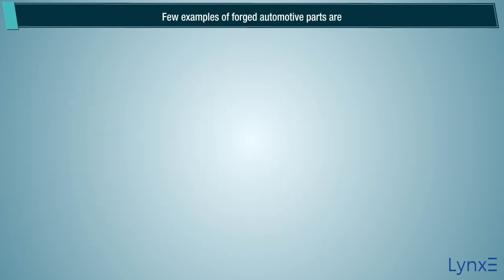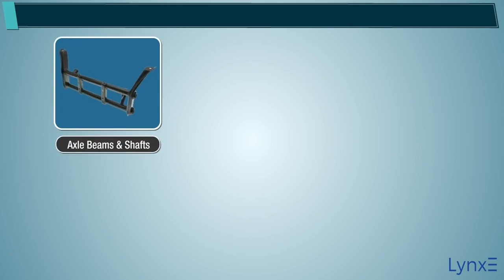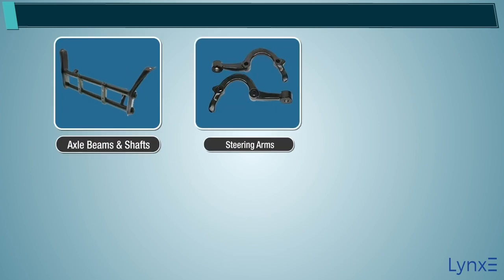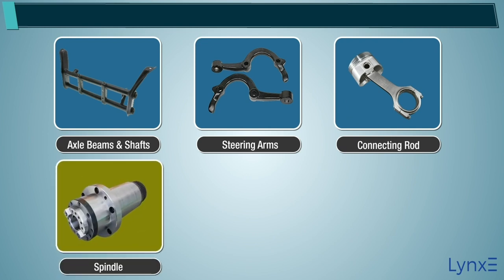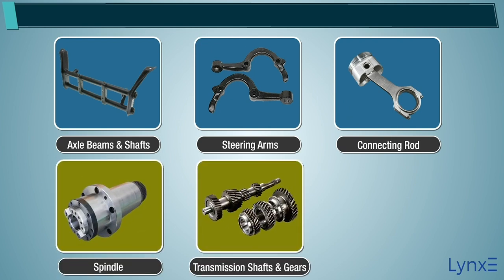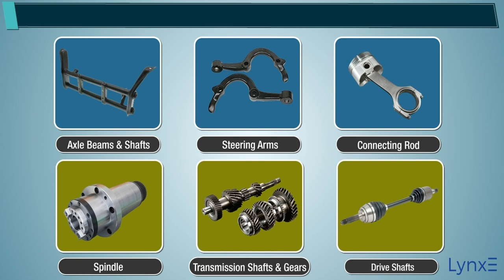Some examples of forged automotive parts are: axle beams and shafts, steering arms, connecting rods, spindles, transmission shafts and gears, drive shafts, etc.